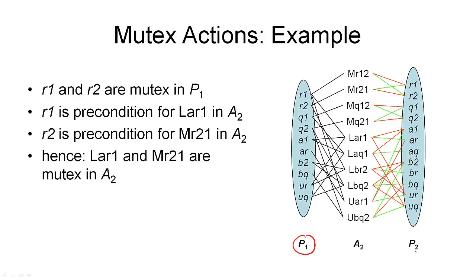So we have P1, A2, and P2 in this graph. You will remember from the previous example that in proposition layer P1, the propositions R1 and R2 were incompatible — so they were mutex.